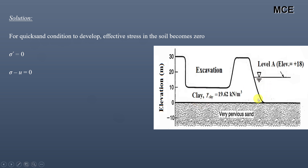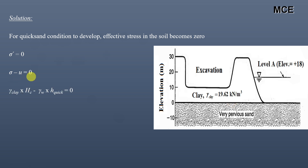We will calculate the total stress at the bottom of the clay and also the pore water pressure at that level — they should be equal for the quicksand condition to develop. Total stress minus pore water pressure equal to zero gives effective stress equal to zero. Total stress at the bottom of the clay equals unit weight of clay multiplied by the depth of clay.